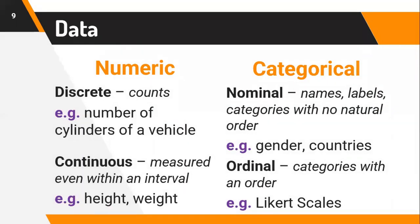Under numeric data, we have two types: discrete and continuous. Discrete data represents finite counts — values that can just be counted in a finite measure — like the number of cylinders of a vehicle, the number of students attending a Zoom meeting, or the number of participants in a sports competition. Continuous data represents measurements within an interval. For instance, temperature can be reported as 50 degrees Celsius, and between 50 and 51 degrees we can also have 50.6. Other examples include height and weight.